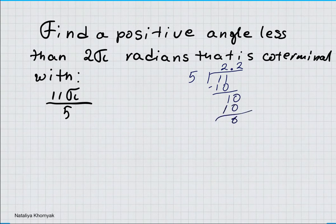11π/5 is equivalent to 2.2π, which is more than 2π. If it's more than 2π, we're going to take away a circle.